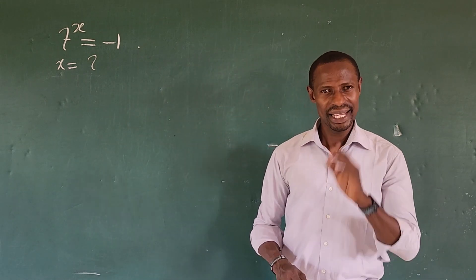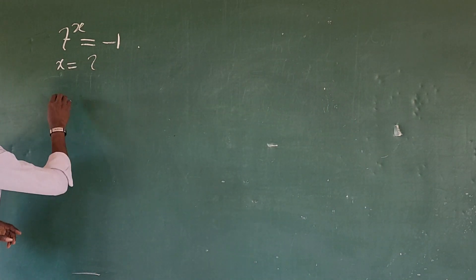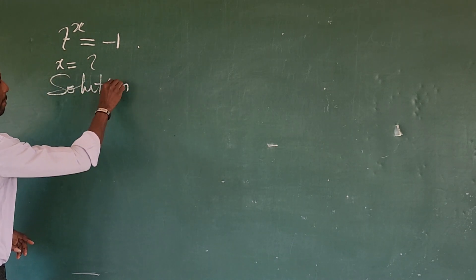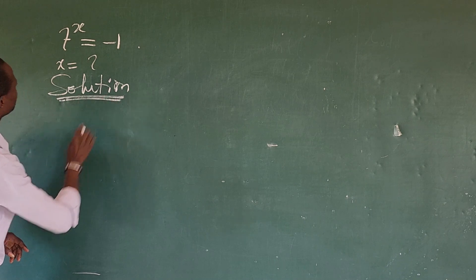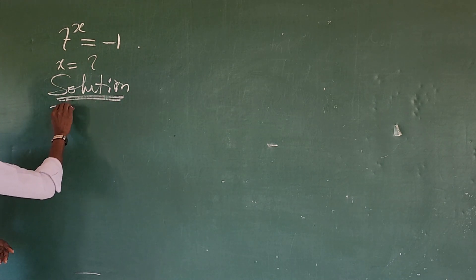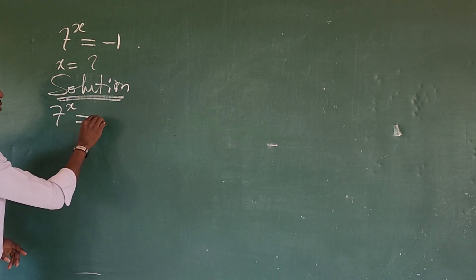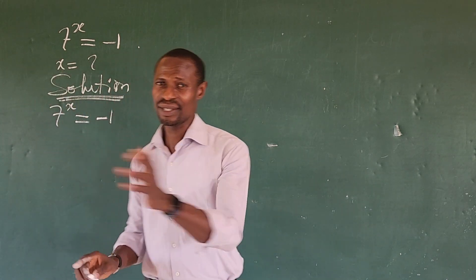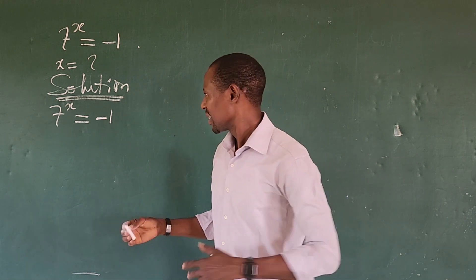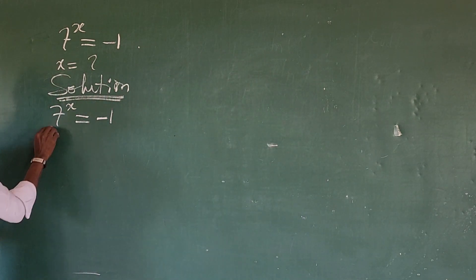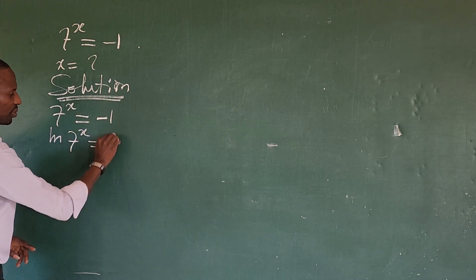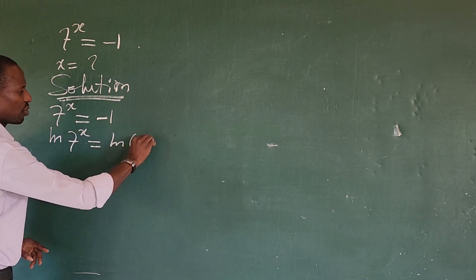But if you're new here, kindly subscribe. So now let's take our solution. We have our solution, let's put down the question of 7 to the power of x equal to minus 1. The first thing to do here is very easy. It's just to log both sides of the equation. So if we log both sides, we have this to be ln of 7^x equal to ln of minus 1.